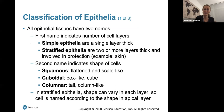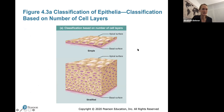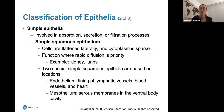Epithelial tissue is named first by the number of cell layers: simple epithelium has one cell layer; stratified epithelium has two or more layers. The second part of the name indicates cell shape: squamous cells are flat and scale-like, cuboidal cells are box-like, and columnar cells are tall and column-shaped. In stratified epithelium, the tissue is always named according to the shape of the apical (top/exposed) layer.